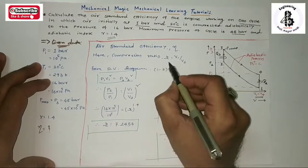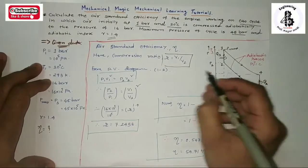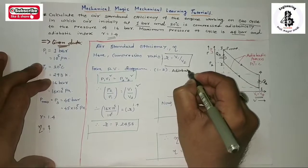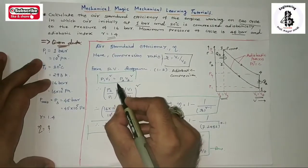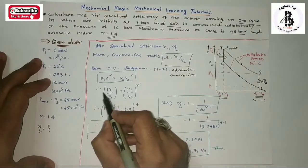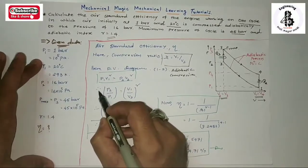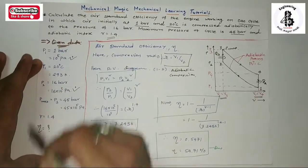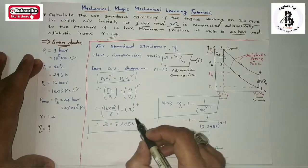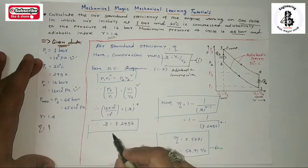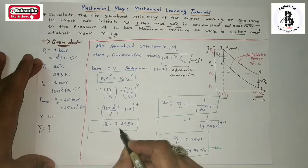The compression ratio R = V1/V2. From the adiabatic compression process 1 to 2: P1 V1^γ = P2 V2^γ, which simplifies to P2/P1 = (V1/V2)^γ. Substituting the known values of P2 and P1, and recognising that V1/V2 is the compression ratio from equation 1, we calculate and get compression ratio R = 7.2458.